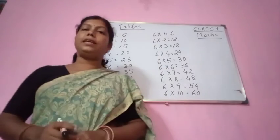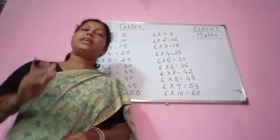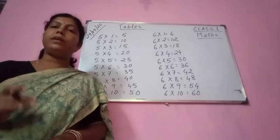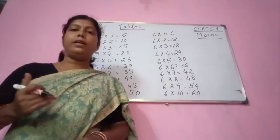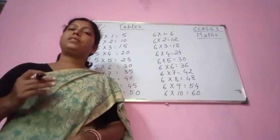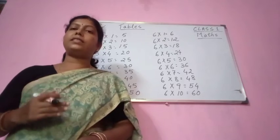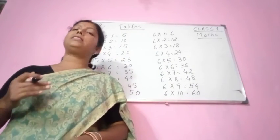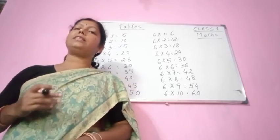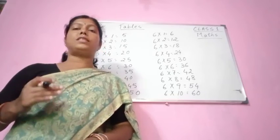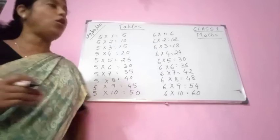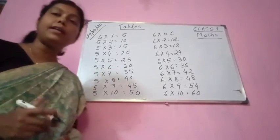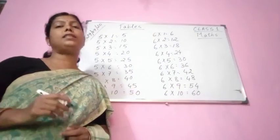So please see the table of 6: 6 ones are 6, 6 twos are 12, 6 threes are 18, 6 fours are 24, 6 fives are 30, 6 sixes are 36, 6 sevens are 42, 6 eights are 48, 6 nines are 54. You have to write down the tables of 5 and 6 in your maths copies.